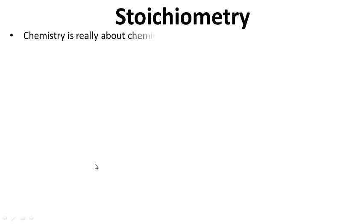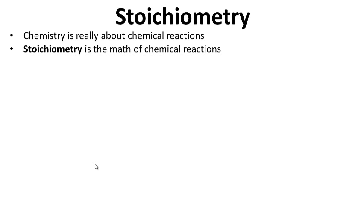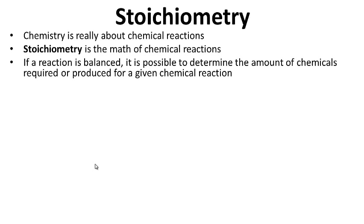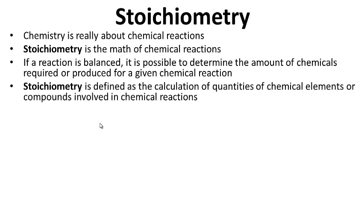Stoichiometry — chemistry is really about chemical reactions. Stoichiometry is simply the math of chemical reactions. If a reaction is balanced, it is possible to determine the amount of chemicals required or produced for a given chemical reaction. Stoichiometry is defined as the calculation of quantities of chemical elements or compounds involved in chemical reactions.